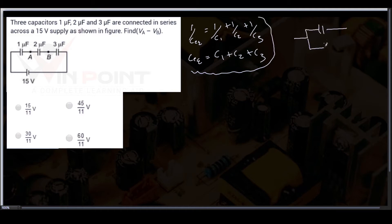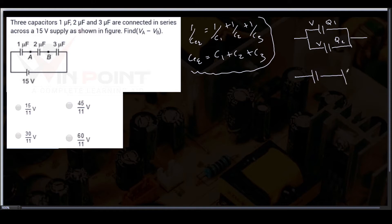The second thing is: if the capacitors are in parallel connection, the voltage will be same — V and V — and the charge will be different: Q1 and Q2. If the capacitors are in series connection, the voltage will be different — V1 and V2 — and the charge will be same. You also need to know the equation relating Q, C, and V: Q equal to CV.